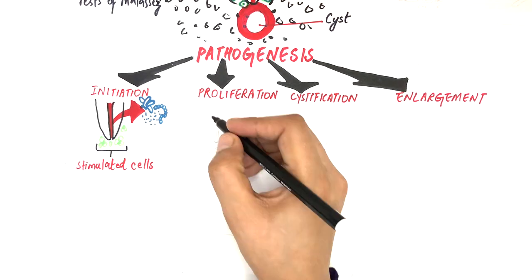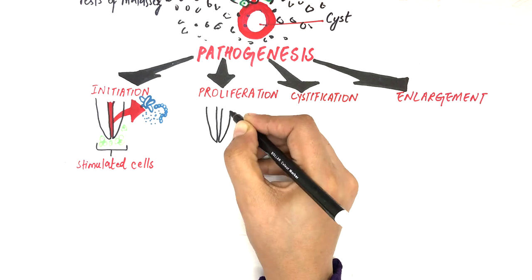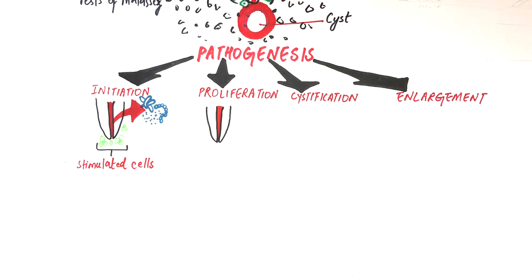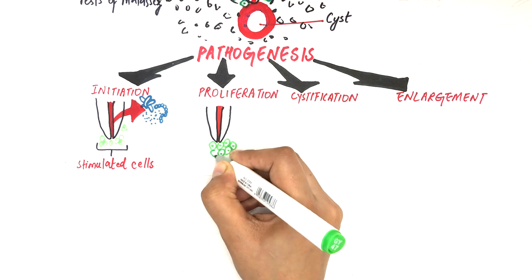In the proliferation phase, as the name suggests, these cells of Malassez excessively proliferate around the root apex, resulting in a large mass of cells located around the periapical region of a tooth.